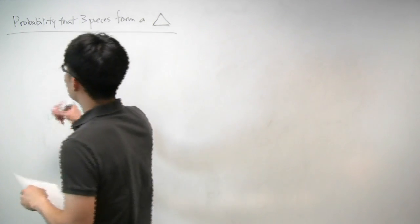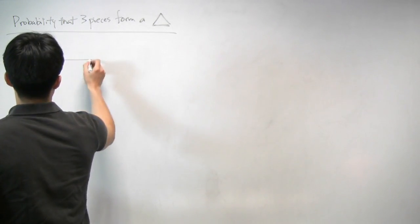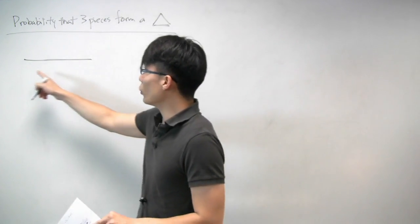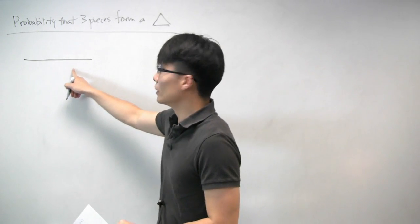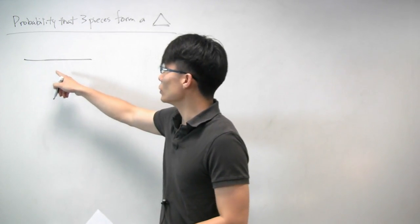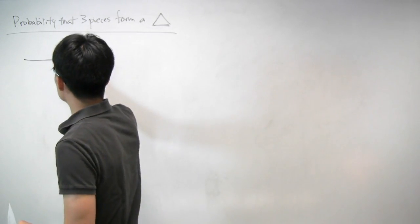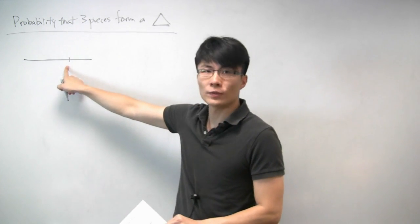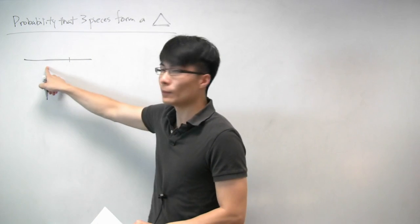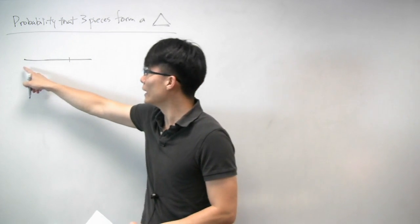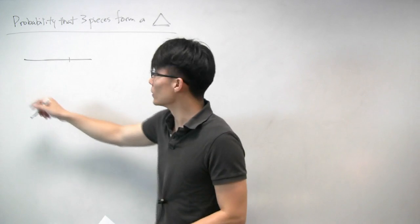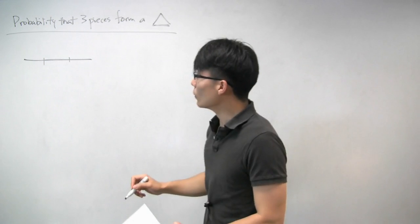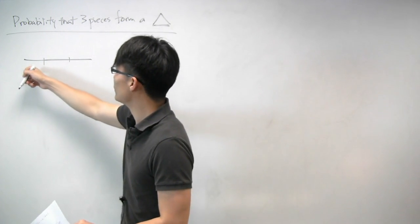We start out with a stick of unit length, so length one, and we'll choose a point along the stick to break. We'll choose that point uniformly at random. Then, independently of this first choice, we'll again choose a second point to break it, again uniformly at random along the entire stick. So we'll break it at two points and have three pieces: the left one, the middle one, and the right one.